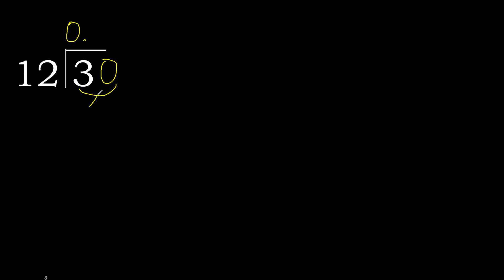30 is not less, therefore work with 30. 12 multiplied by which number is nearest to 30 but not greater? 12 multiplied by 3 is 36 — greater. 12 multiplied by 2 is 24 — not greater. Subtract 6.